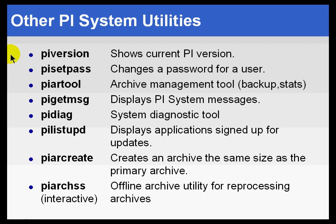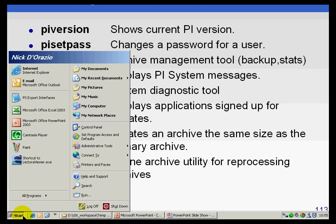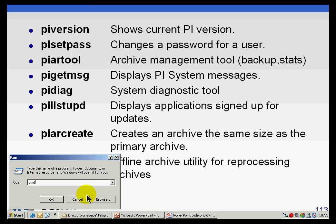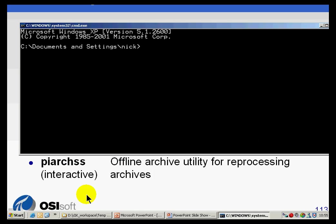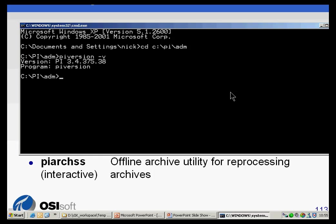Just to get a feel for what some of these utilities are, let us actually run some of them. We will start with PI Version and PI Set Pass. To start, I'll go down to the command prompt and run CMD to bring up the Windows command prompt. I am going to change directories to C:\PI\ADM — that is the administrative directory — where I can run things like PI Version with a dash V, which simply reports what version of PI you are running.